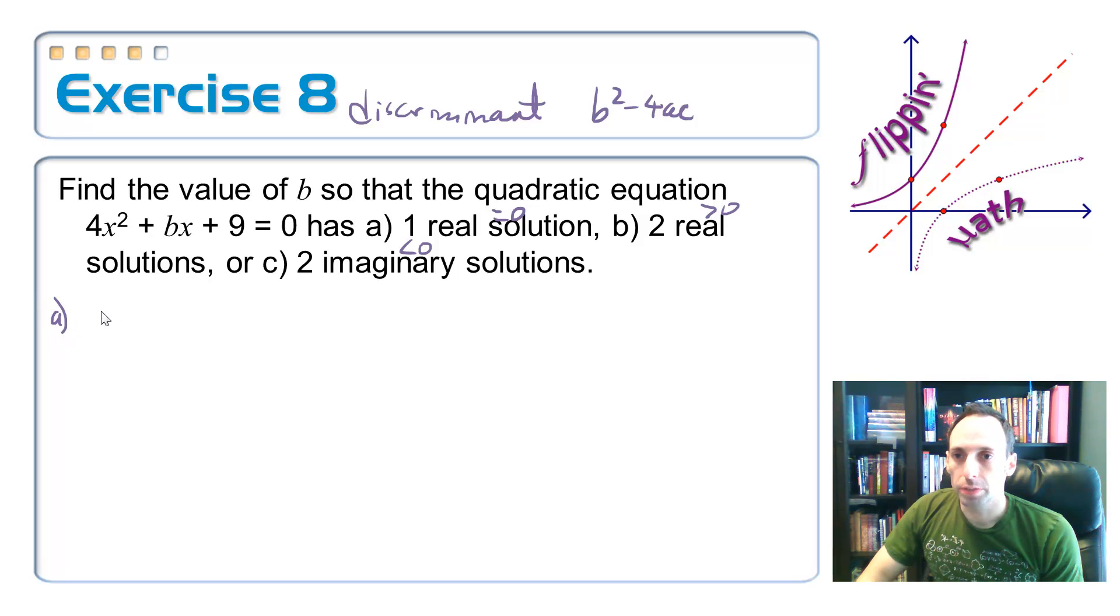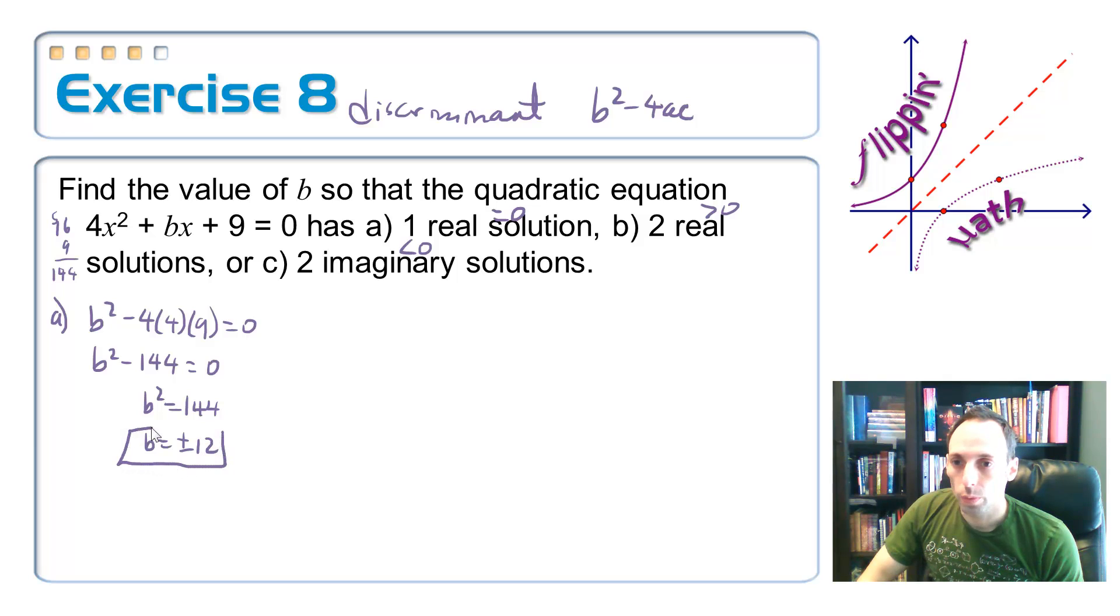So part a, we want b squared minus 4 times a, which is 4, times c, which is 9. And this is going to be equal to zero. Multiplying this out, I get 16 times 9. 16 and 9. Here's 54. 5, 14. There we go. So b squared minus 144 equals zero. b squared equals 144. So b is just simply equal to plus or minus 12, when I take the square root. So if I plug in a positive 12 or a negative 12, I would get one real answer. Reason why is because that's what makes this thing a perfect square trinomial.